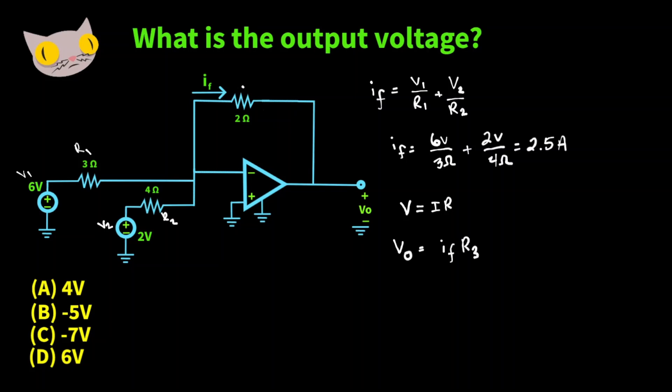We'll call this 2 ohm resistor R3. So VO is going to equal 2.5 amps times 2 ohms. And you want to make sure you include a negative sign in front of the current. And this is going to give us an output voltage of negative 5 volts.